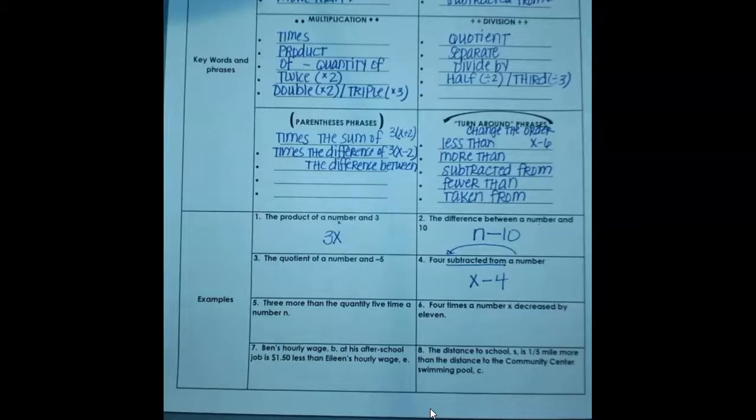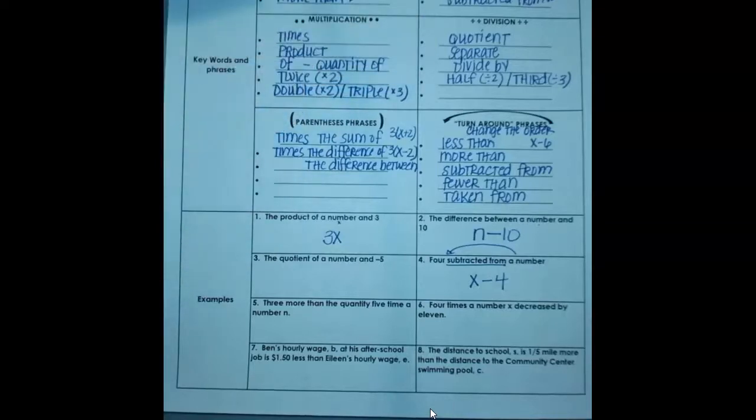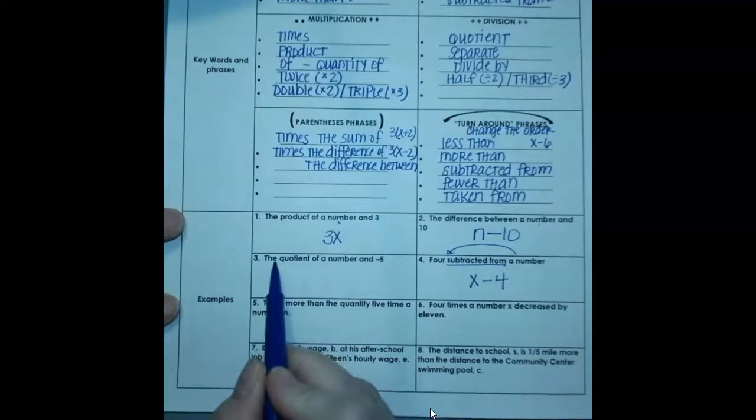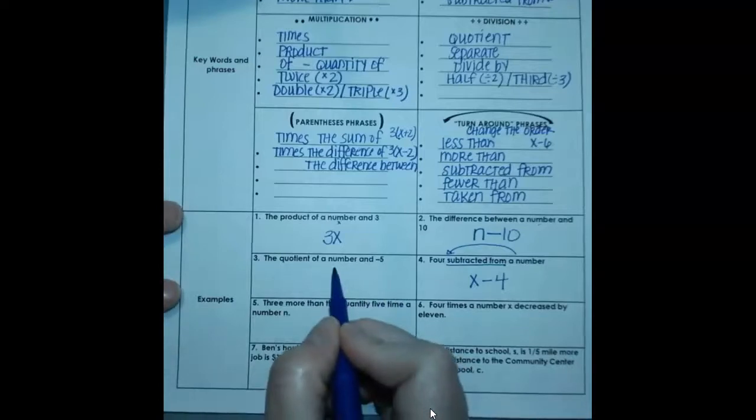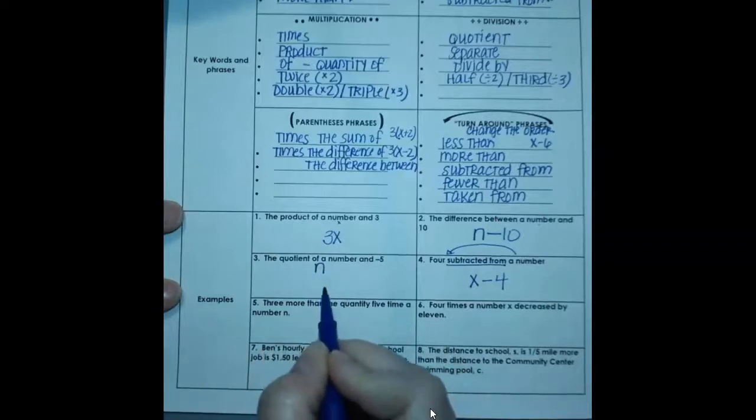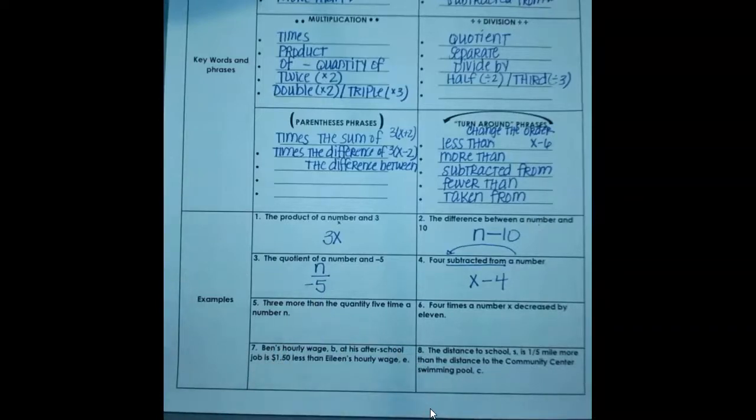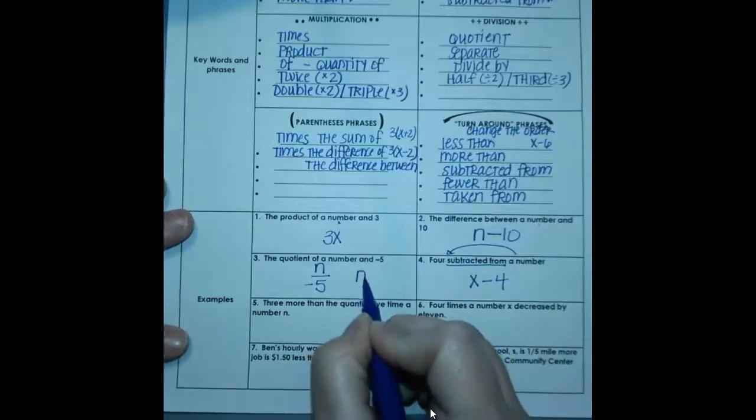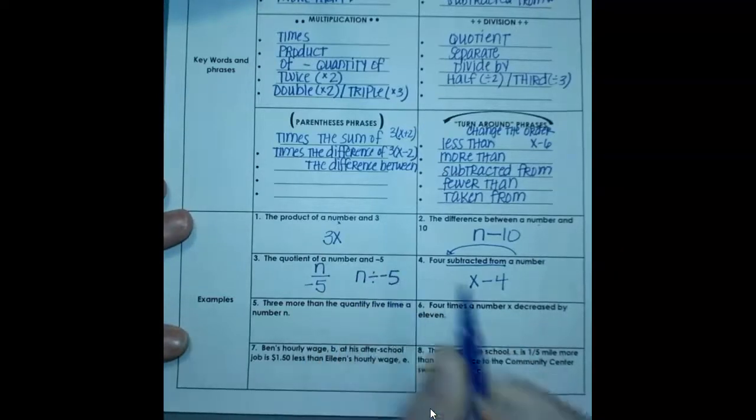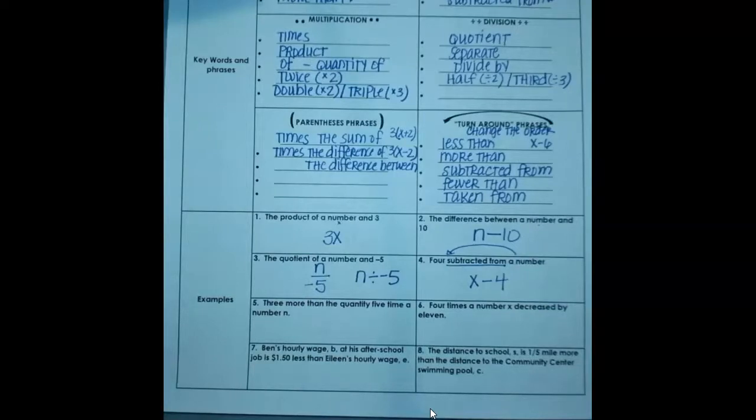Now let's go back to number three. The quotient of a number and negative five. Quotient is a division word. So that means we're going to be dividing. And dividing, notice none of those showed up in our turnaround phrases. So you just write it the way it's written. The quotient of a number. I don't know what the number is. We've had a couple x's, one n. Doesn't really matter what letter you pick unless they tell you. So the quotient of a number and negative five. We're showing division. We could have also written it n divided by negative five. But generally what you're going to see in high school is it's going to be written as a fraction in this form. That's the most likely way you're going to see this.